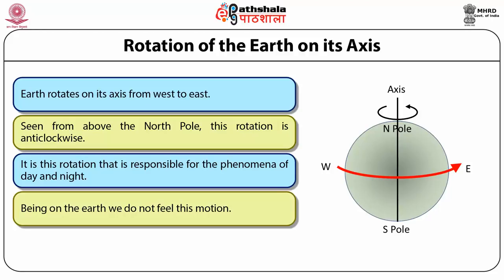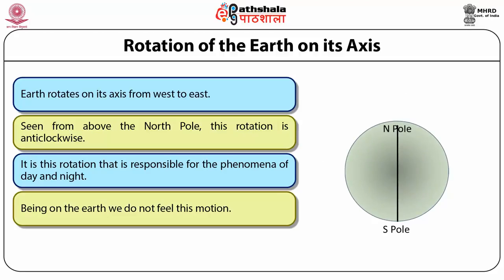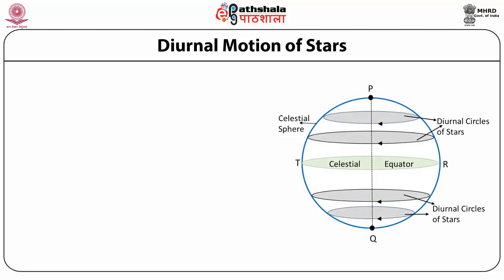Being on Earth, we do not feel this motion. Instead, celestial objects appear to rotate from east to west, completing one orbit in 24 hours. Since celestial objects appear to rotate from east to west completing one orbit in 24 hours, this daily motion of objects is called diurnal motion.